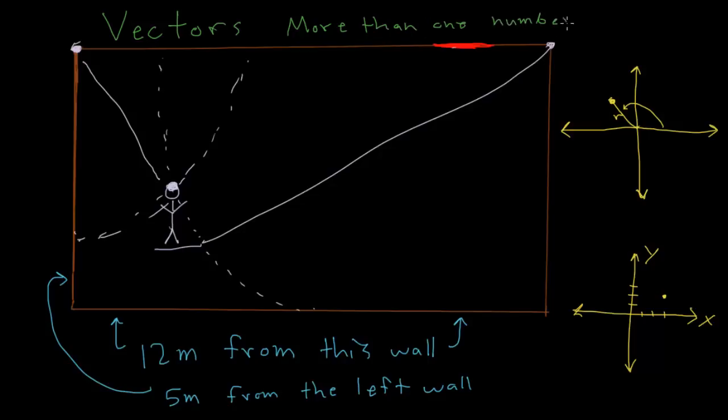Each number means something specific, so the numbers have to be ordered. I can't mix up these two distances here. If I mix up these two distances, I'll end up somewhere else. But anyway, that's a pretty good definition of what a vector is.